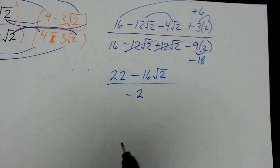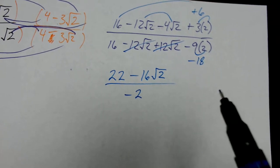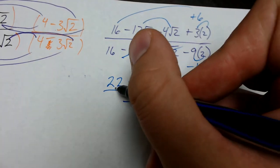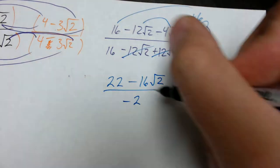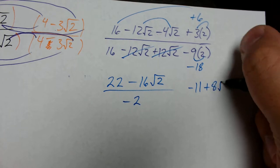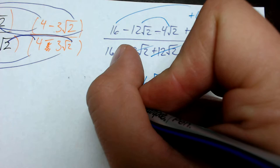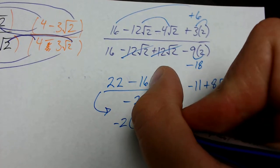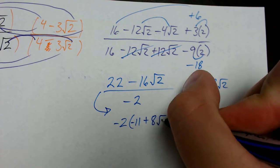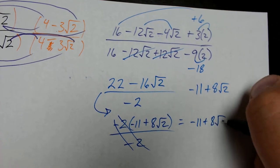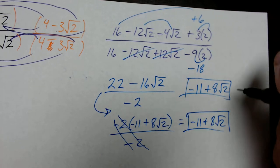This is almost our final answer, but it can be reduced because 22 and 16 can both be divided by negative 2. We can either divide each term by the denominator — 22 divided by negative 2 is negative 11, negative 16 divided by negative 2 is positive 8 root 2 — or factor out negative 2 from the numerator and cancel. Either way, our final answer is negative 11 plus 8 root 2.